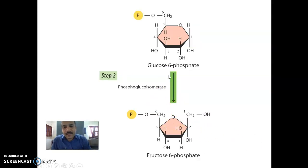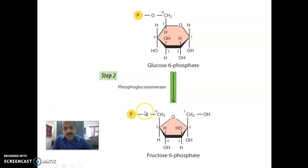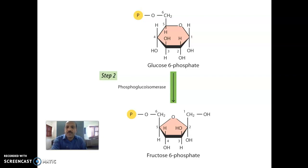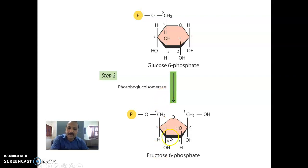The second reaction: glucose-6-phosphate is converted into fructose-6-phosphate. Glucose-6-phosphate is a 6-carbon compound. The most important isomerization reaction is that glucose-6-phosphate is converted into fructose-6-phosphate by the involvement of an important enzyme called phosphoglucoisomerase.